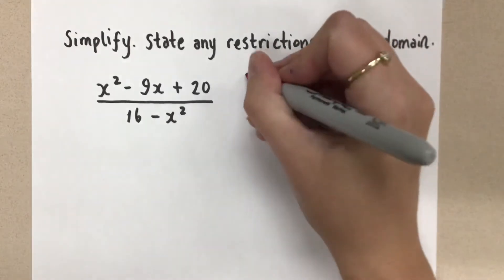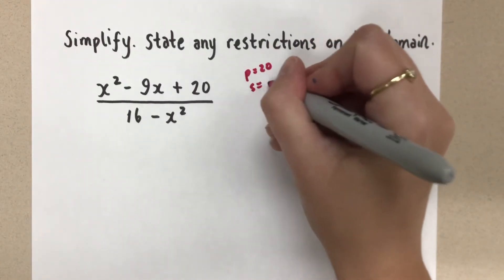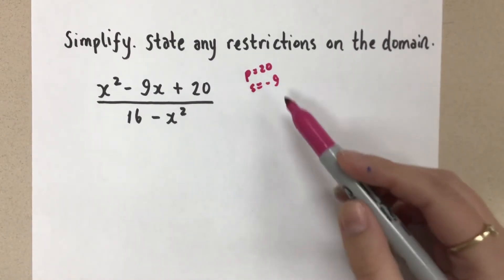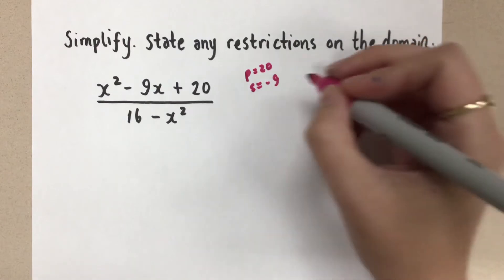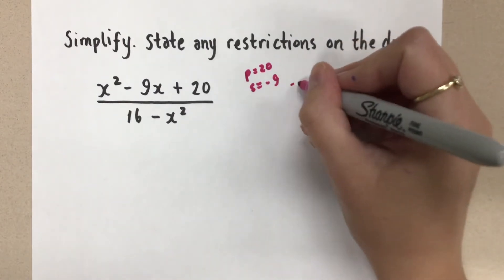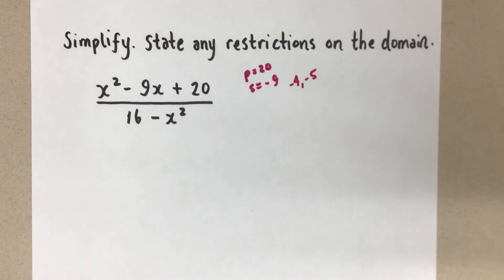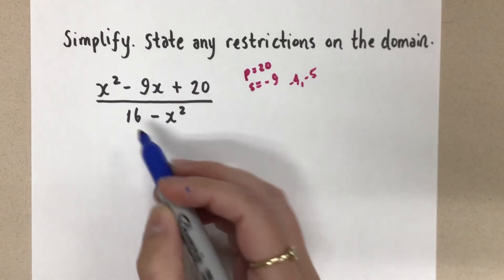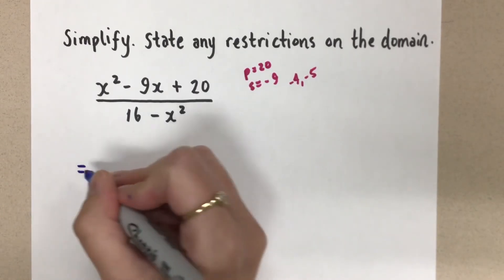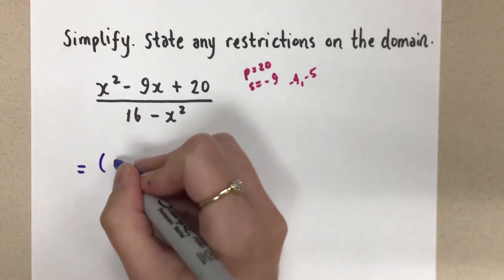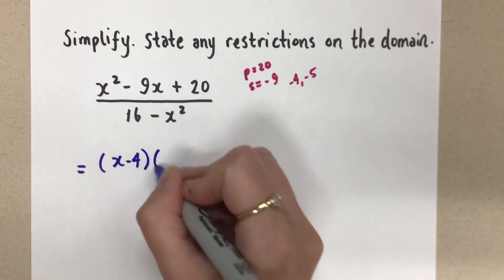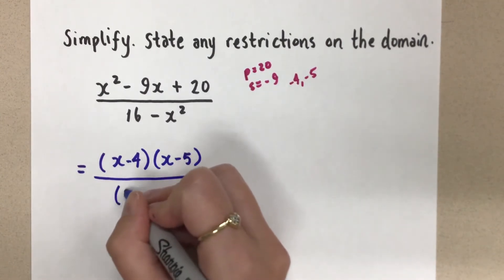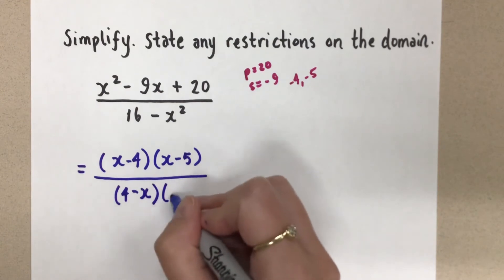So in the numerator my product is 20 and my sum is negative 9, and the two numbers that match those properties are negative 4 and negative 5. In the denominator I have a difference of squares with a 4 squared from that 16. So rewriting in factored form: in the numerator I have (x minus 4)(x minus 5), and in the denominator I have (4 minus x)(4 plus x).